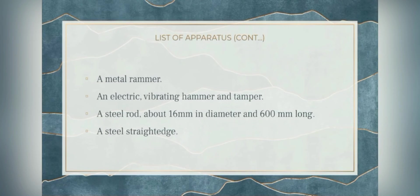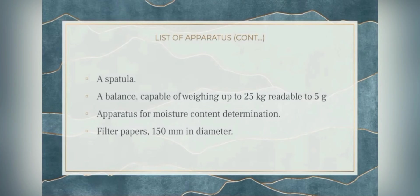The sixth apparatus is an electric vibrating hammer and tamper, followed by a steel rod about 16 mm in diameter and 600 mm long. The eighth is a steel straight edge — a steel strip about 300 mm long, 25 mm wide, and 3 mm thick with one beveled edge. The ninth is a spatula. The tenth is a balance capable of weighing up to 25 kg, readable to 5 grams. The eleventh is apparatus for moisture content determination, and the twelfth is filter papers of 150 mm in diameter, for example Whatman Number 1 or equivalent.